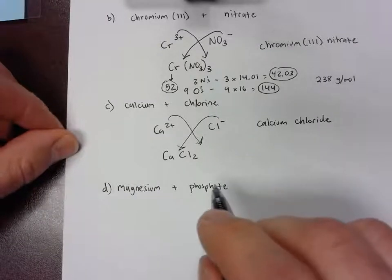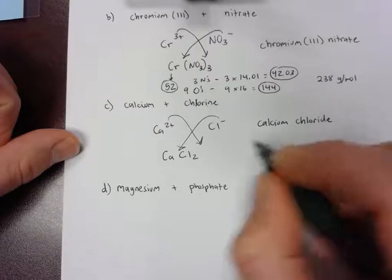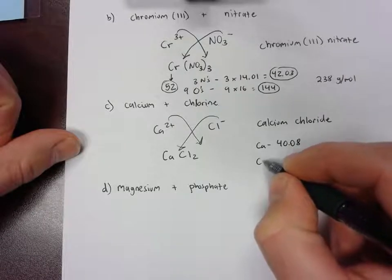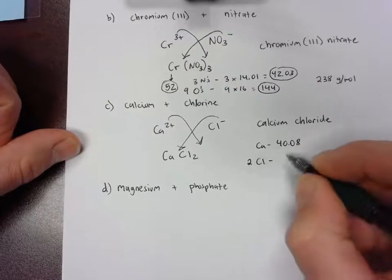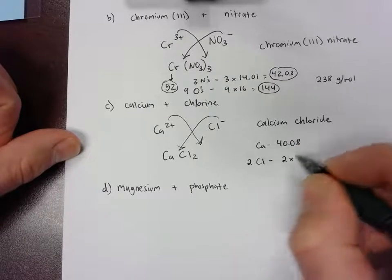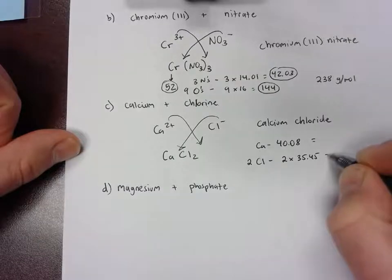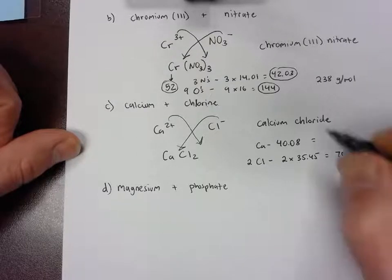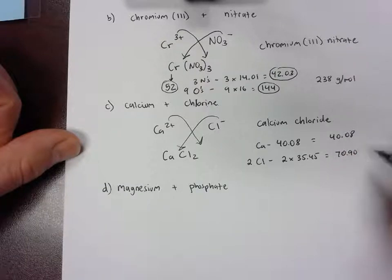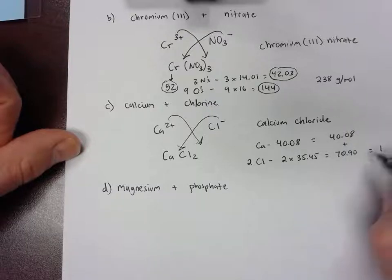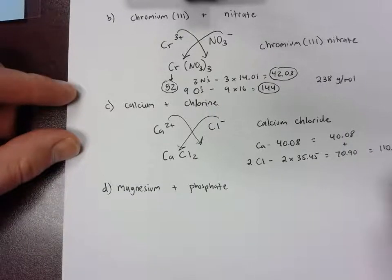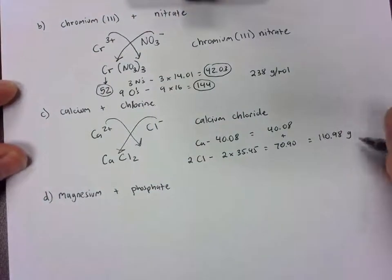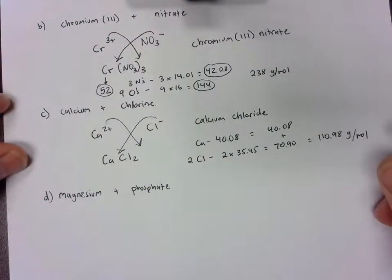For the molar mass, same idea for this one. Calcium has a molar mass of 40.08 when I look at the periodic table, and then I have chlorine, there are two of them, and each one has 35.45 grams per mole. Then when I add this together, this should be 70.90 and then again this is 40.08. When I add these two together I should get 110.98 grams per mole.